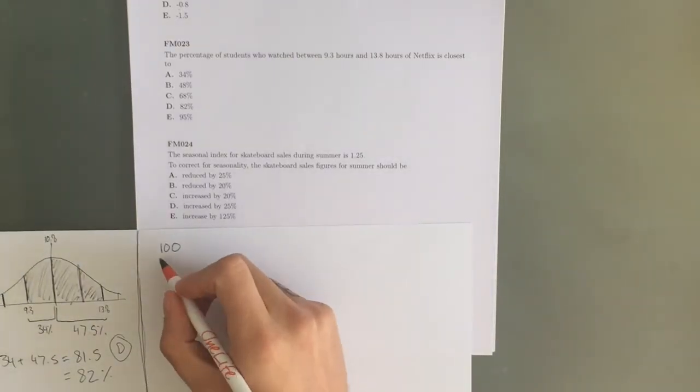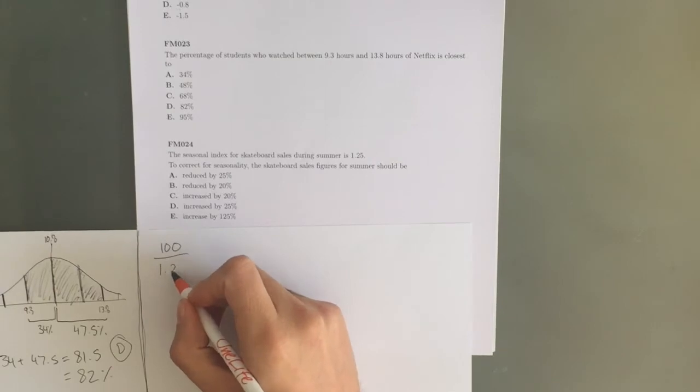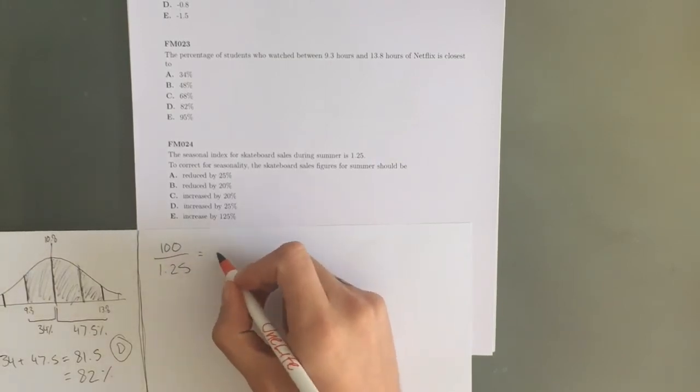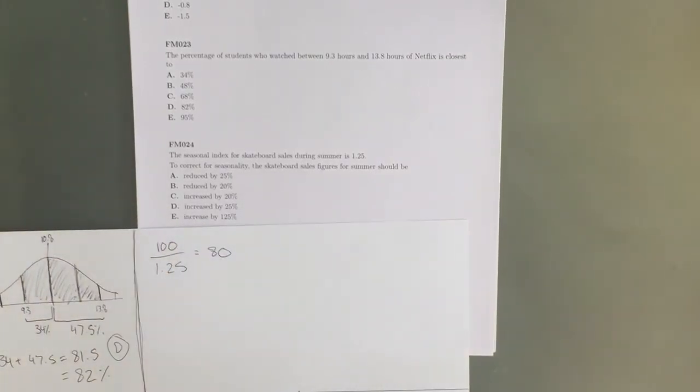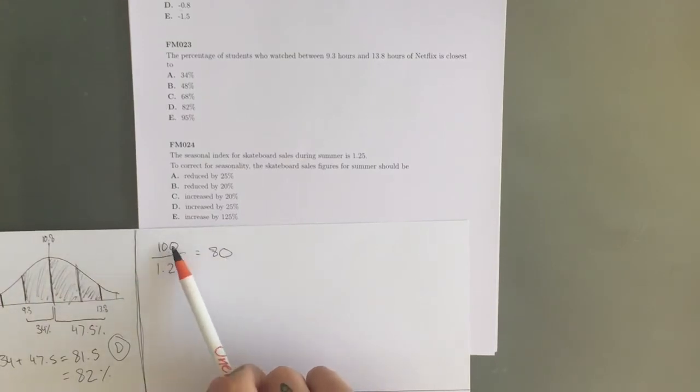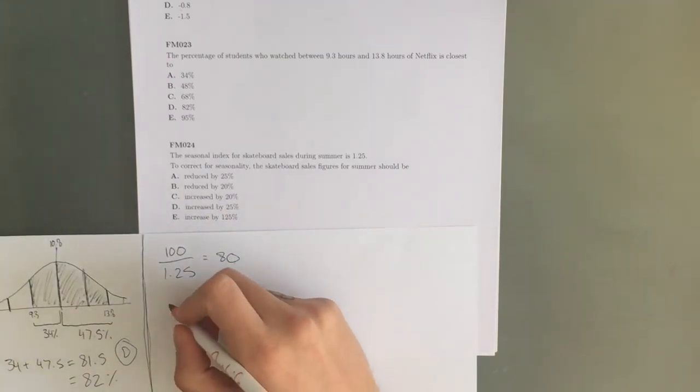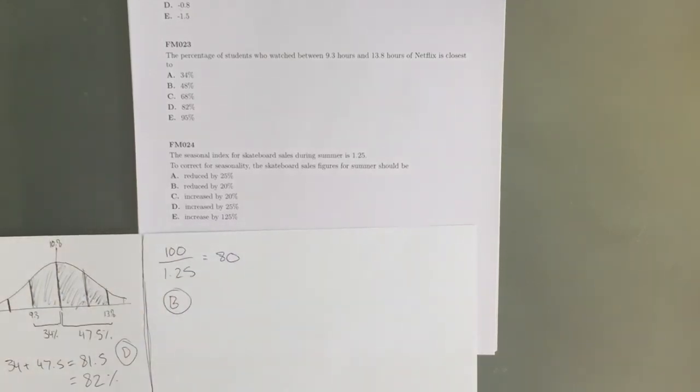So if we take 100 as just a nominal figure, divide that by 1.25, we're going to get an answer of 80, and we can see by this difference between 100 and 80, that's a reduction of 20%, which fits in nicely with option B, reduced by 20%, making B our final answer.